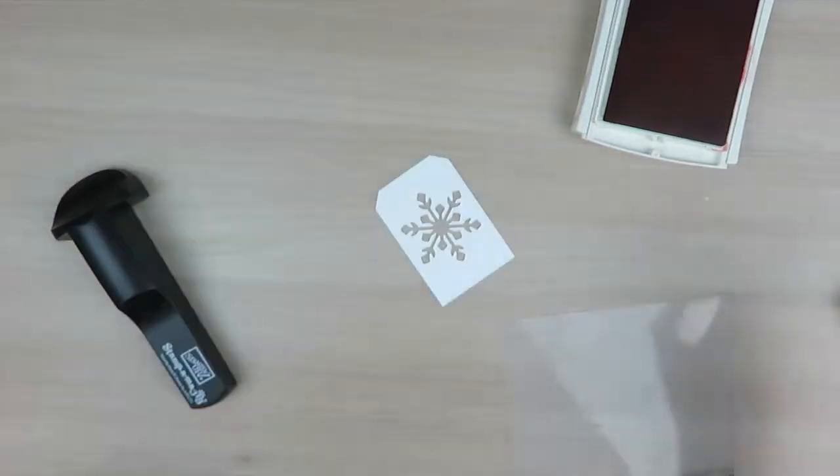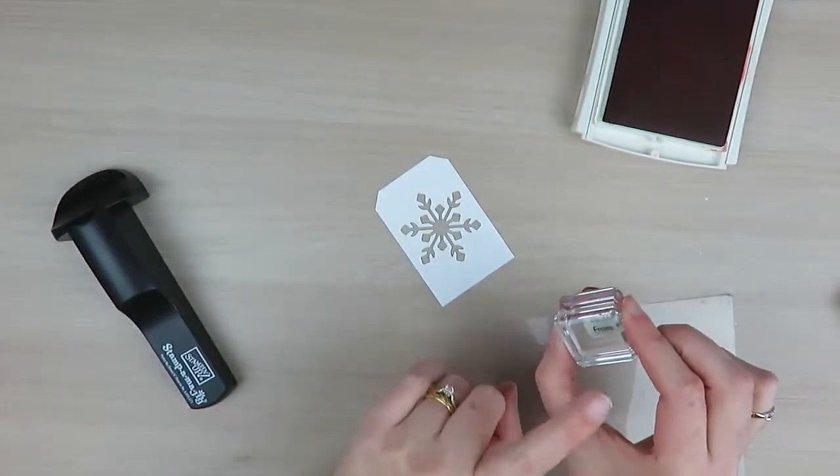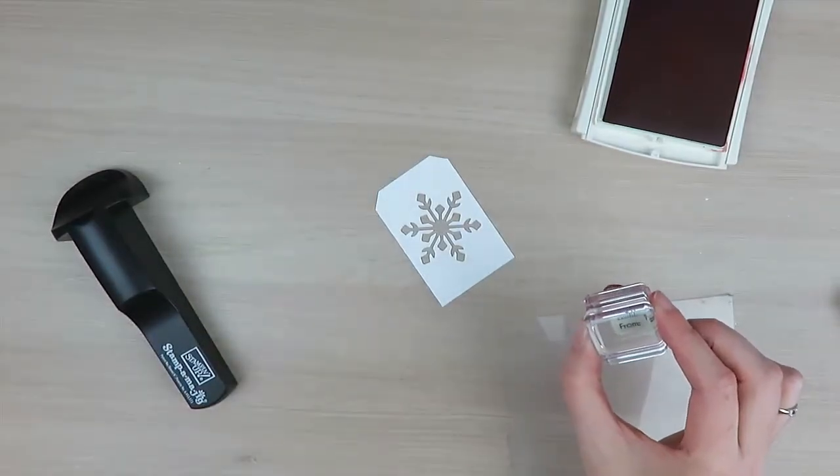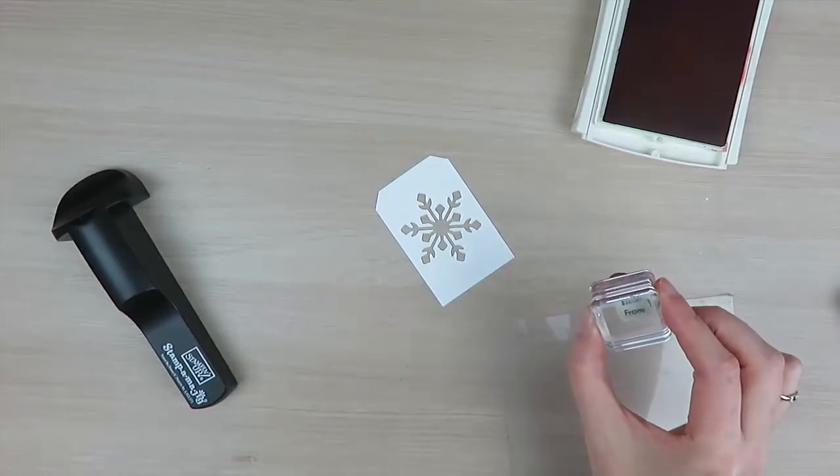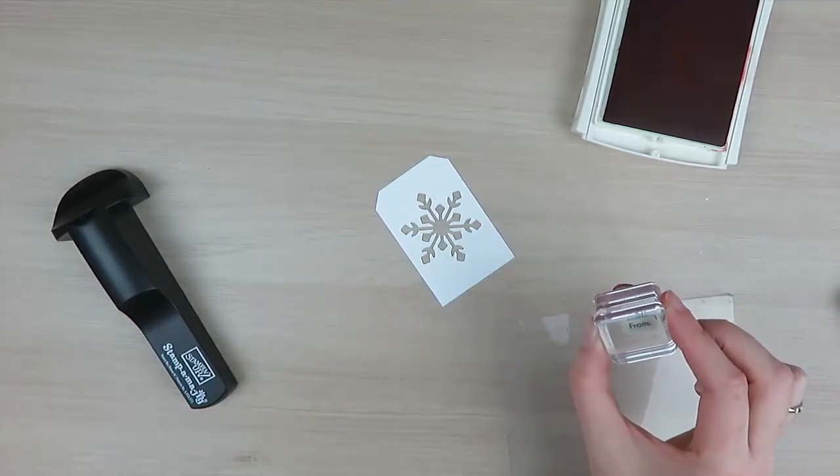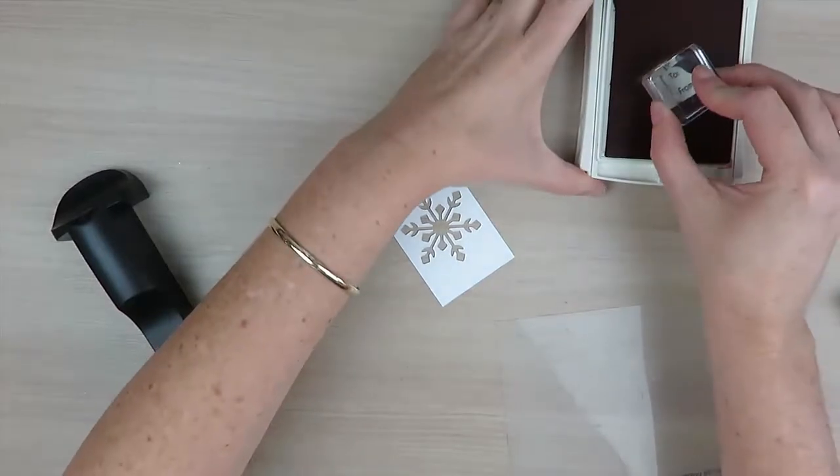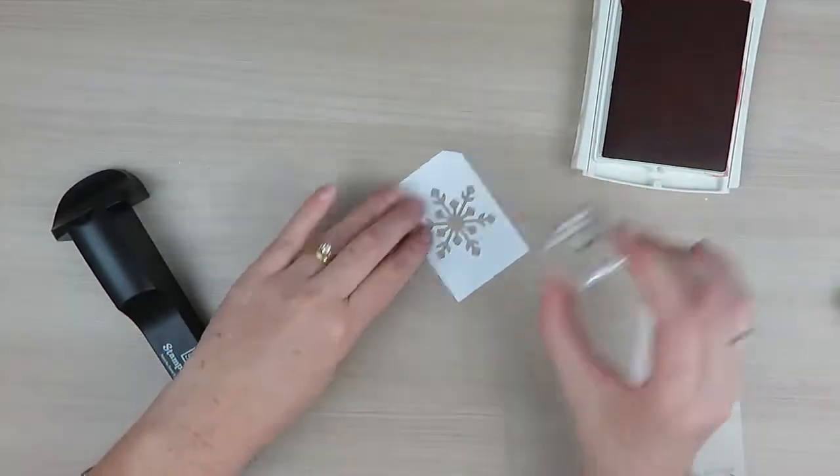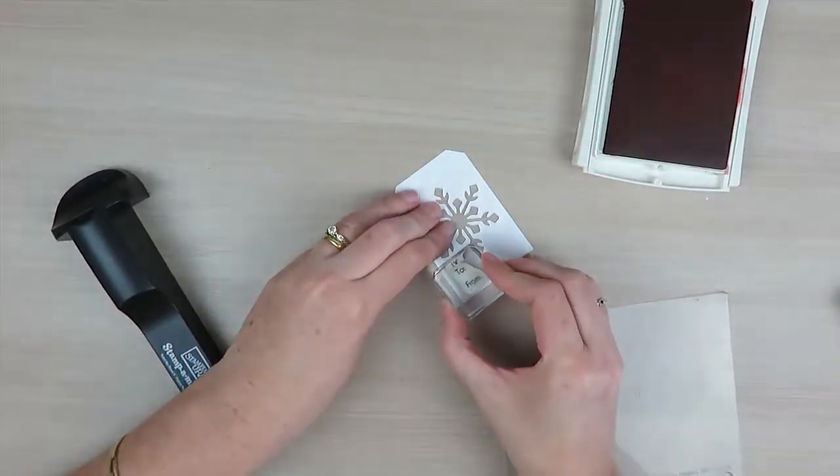On the back side, I'm using the to and from stamp that comes from the Tags and Trimmings stamp set. I'm going to stamp this on the back so you can write the to and from information.